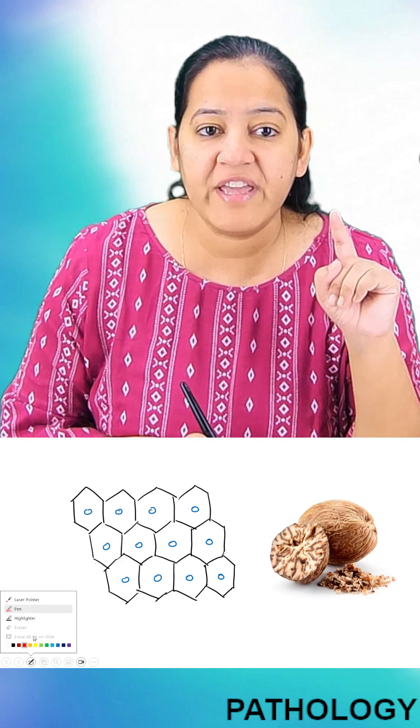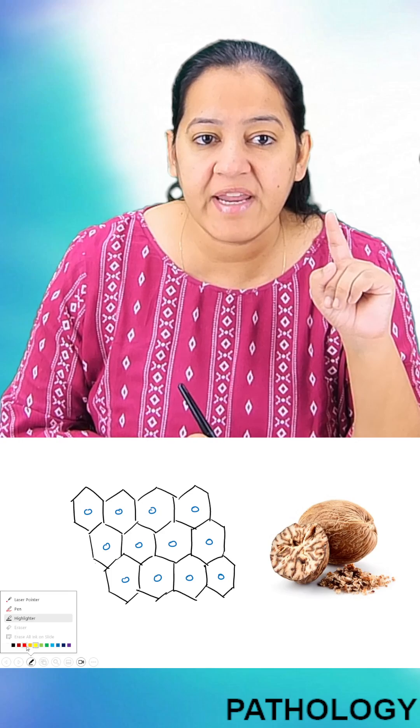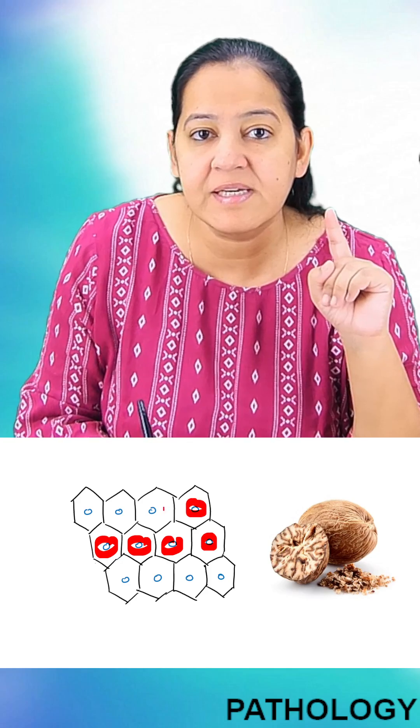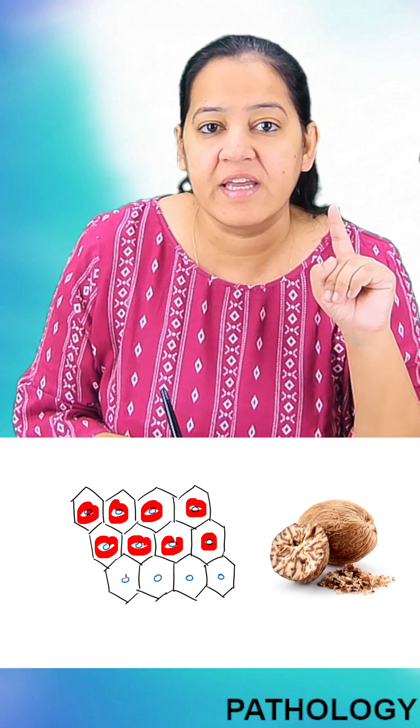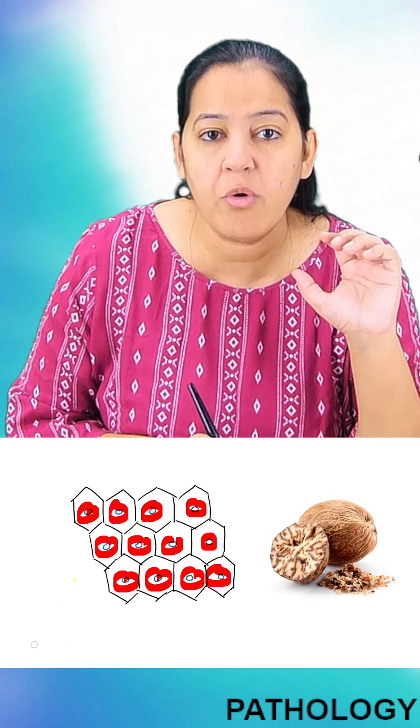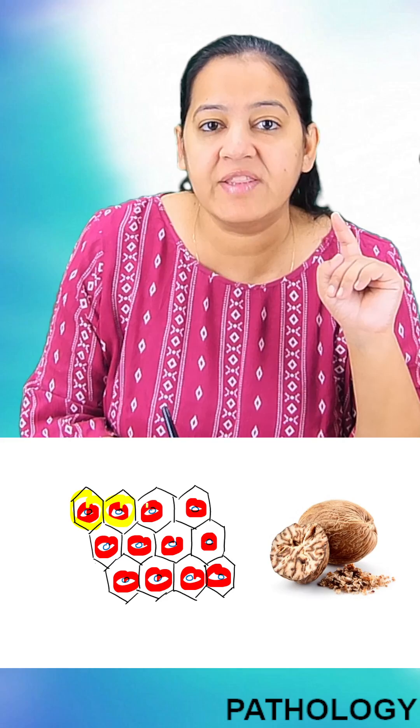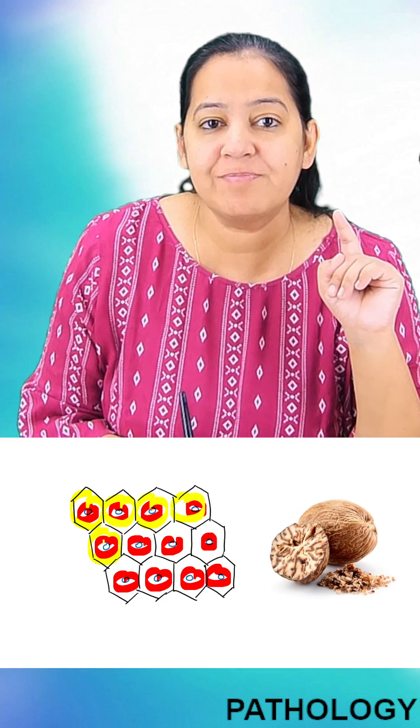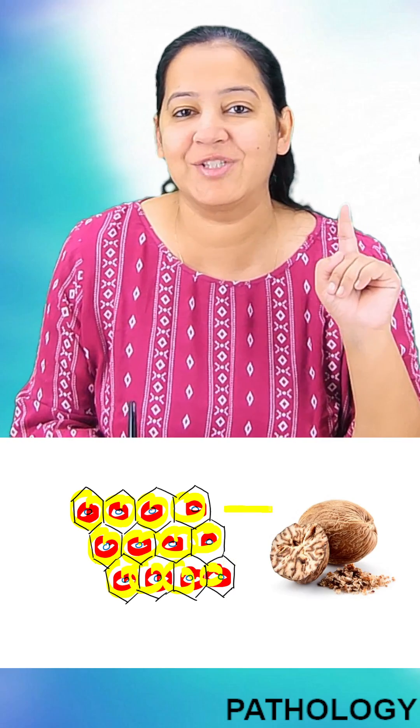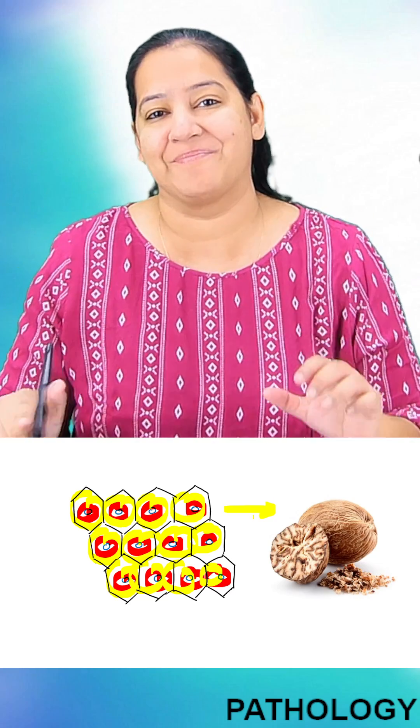So the center of each lobule is red in color, you can see, because of hemorrhagic necrosis. And the periphery of the lobule, the peripheral hepatocytes undergo fatty change. That's why they are yellow in color. And this particular red, yellow mottled appearance is looking like the nutmeg. That's why it is compared as nutmeg appearance.